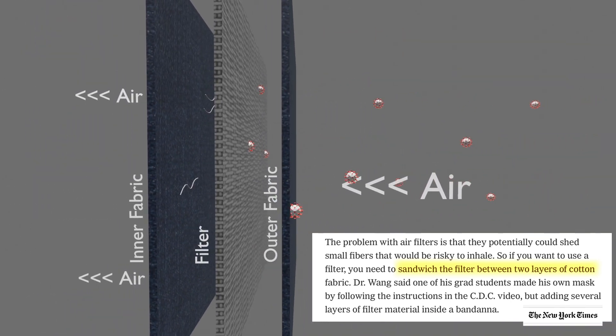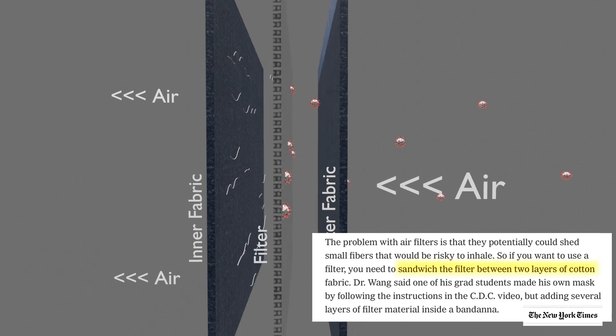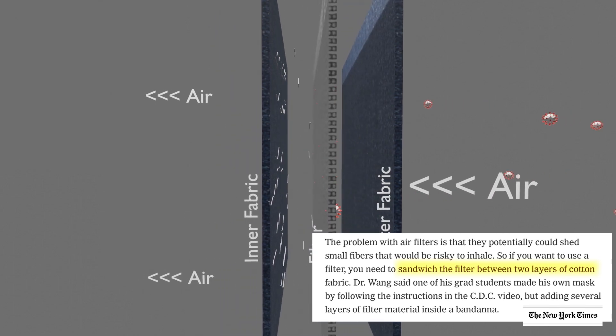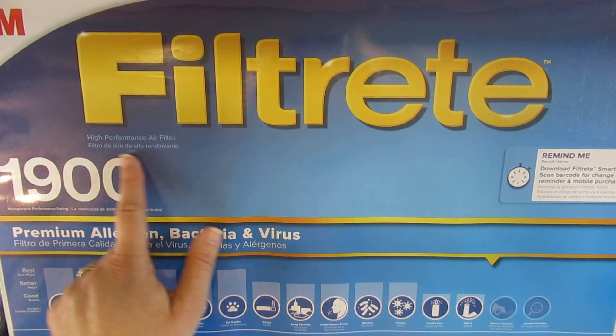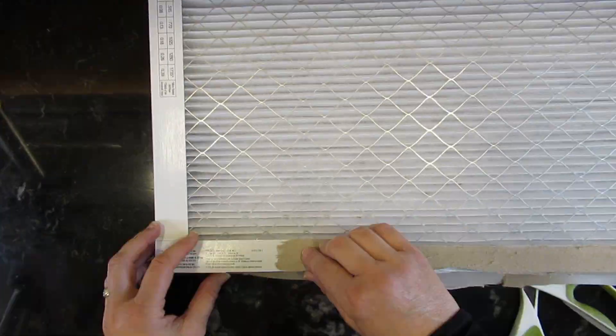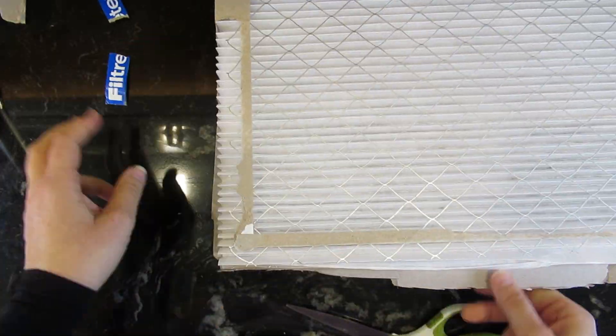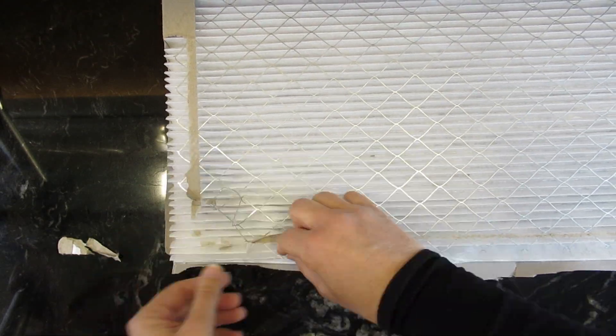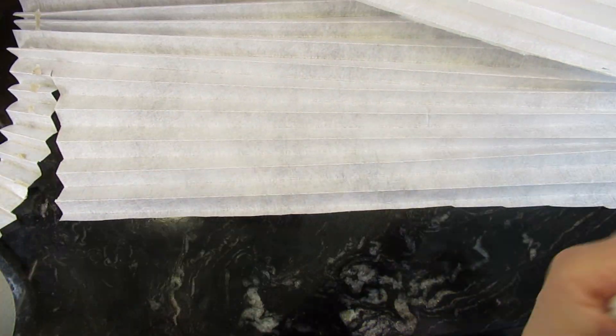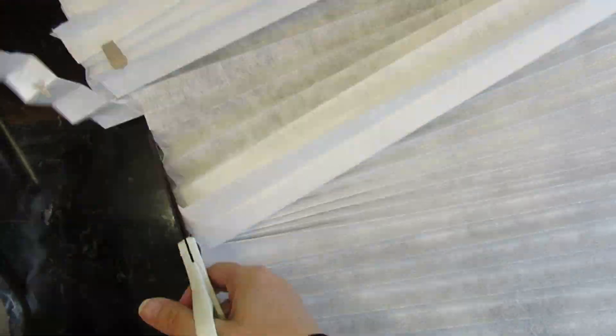I purchased this 3M filter with the correct specifications. I cut off the cardboard frame and pulled off the grid work on the front and the back. I trimmed around the edges to remove hot glue where the cardboard frame was attached.